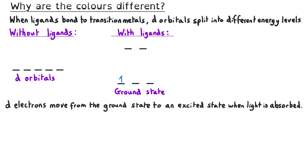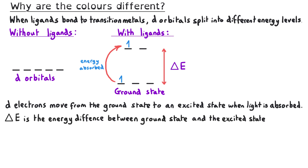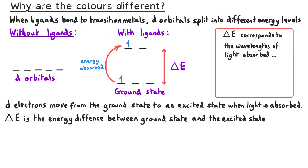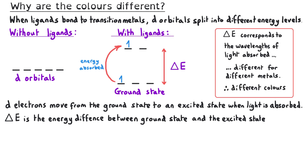D electrons will move from the ground state to an excited state when light is absorbed. The light absorbed needs to give the electrons enough energy to move from the ground state to the excited state. Delta E is the symbol for this energy difference between the ground state and the excited state. Different wavelengths of light have different amounts of energy, and so delta E corresponds to the wavelengths of light absorbed. Since delta E is different for different metals, different wavelengths of light will be absorbed and transmitted, so we will see different colours for the different metals.